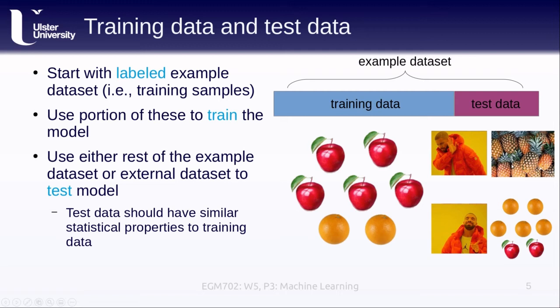Later after we have developed our model and we're using it in further applications, we can hopefully feed it things like pineapples and it would at least be able to tell us that this isn't an orange or this isn't an apple.